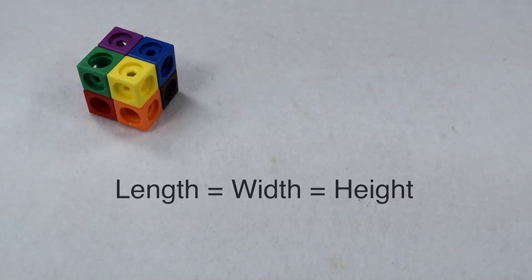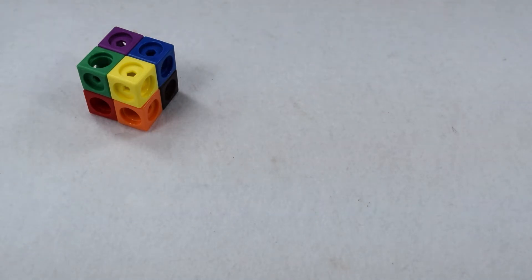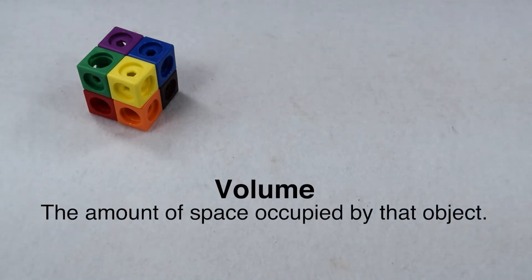On this cube, they're all worth about 2 inches. We want to find the volume of our cube. The volume is the amount of space occupied by that object.